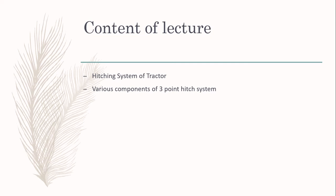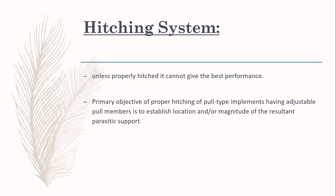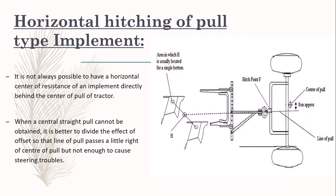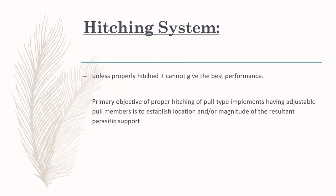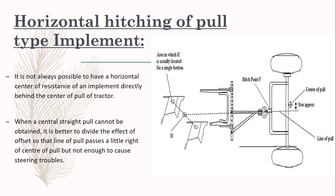The various components of a 3-point hitch system. So what is a hitching system? I told you in the last lecture that if the implement is not attached with the tractor at a specific location, it would not provide any benefit or it will give lesser efficiency. That's why the hitching point or hitching system is designed accordingly. There are two types of hitching systems: horizontal type and vertical type, because to locate a point in any plane you need two coordinates, X and Y. Similarly, horizontal and vertical position of a hitching point is necessary.